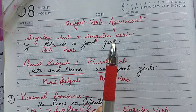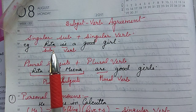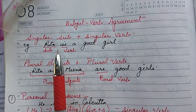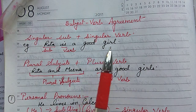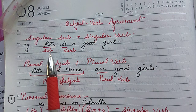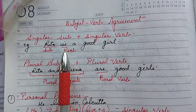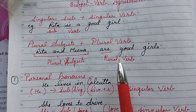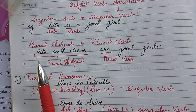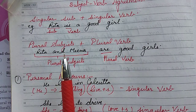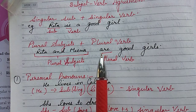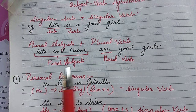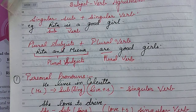For example, Rita is a singular subject, so we use 'is' — not 'Rita are a good girl,' which is wrong. The correct statement is 'Rita is a good girl,' where 'is' is in singular form. Similarly, a plural subject always takes a plural verb. For example, Rita and Mina are plural subjects, so we use 'are' — 'Rita and Mina are good girls.'